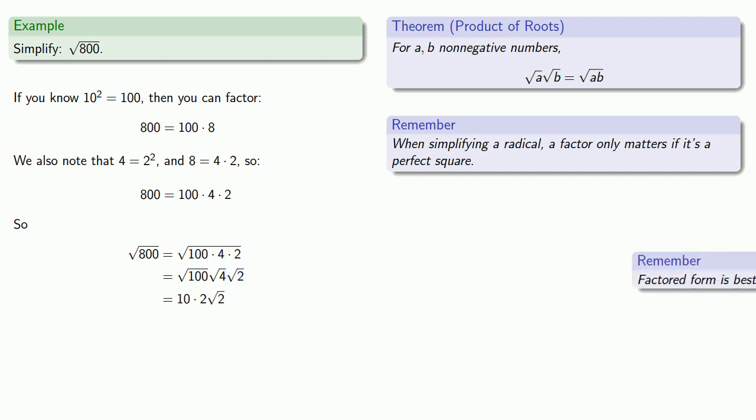And again, while factored form is best, there's nothing else we can do with this expression. So we can multiply 10 by 2 to get 20, and our square root of 2 gets carried along for the ride. For our final answer, 20 square roots of 2.